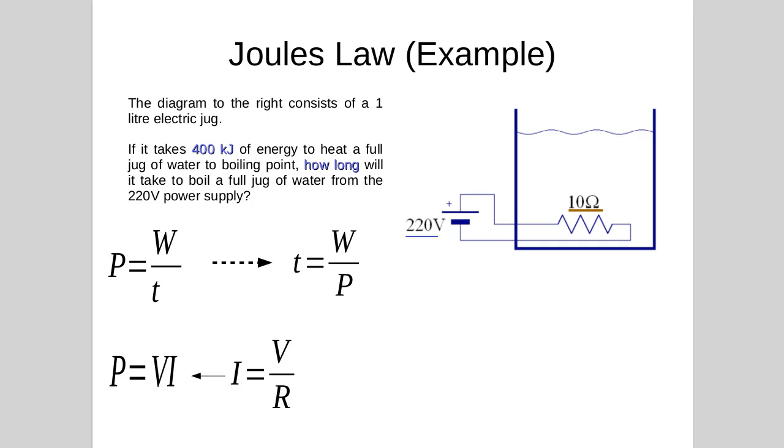So if we rearrange Ohm's Law so that we have I equals V over R, then we can substitute that into P equals VI, and so we get the equation P equals V squared over R.